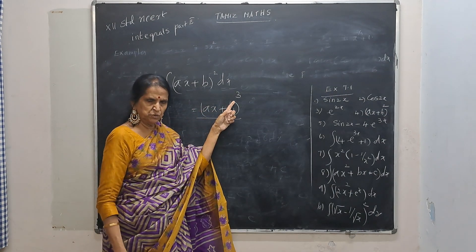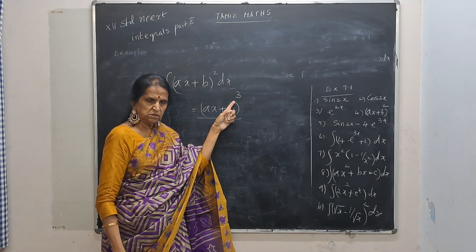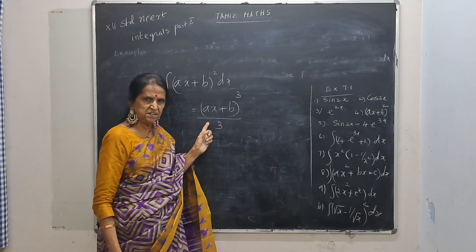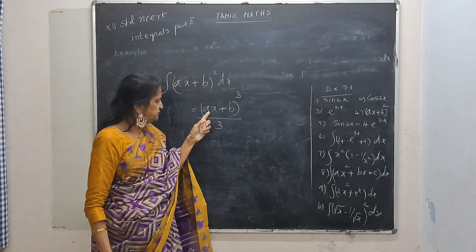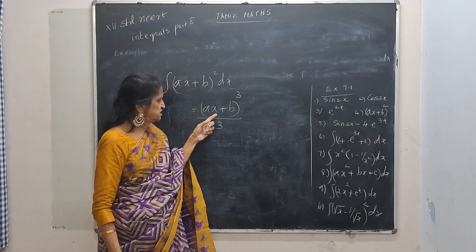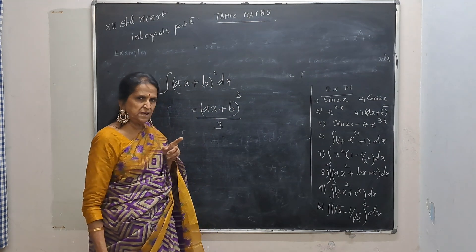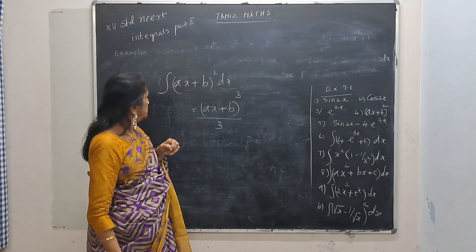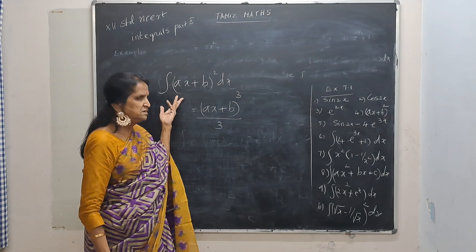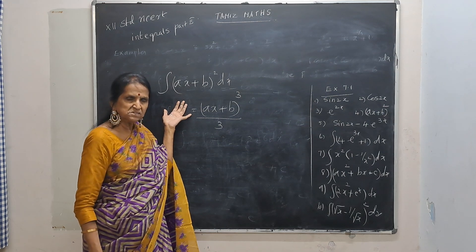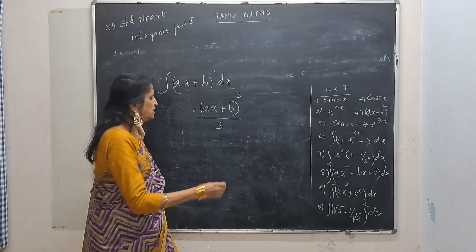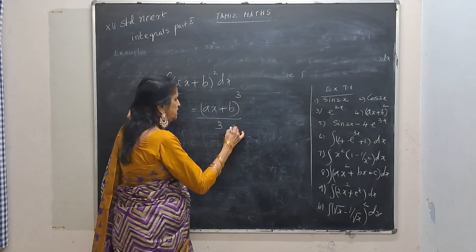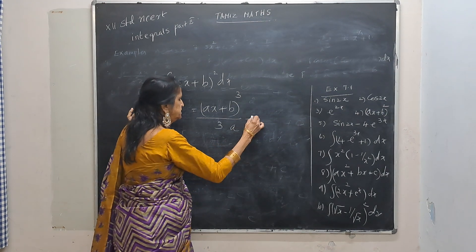Write (ax + b) to the power 3. Then 3 and 3 will cancel, and the derivative of ax + b is a. But that's not here. So the answer will be (ax + b) cubed divided by 3a, plus c.